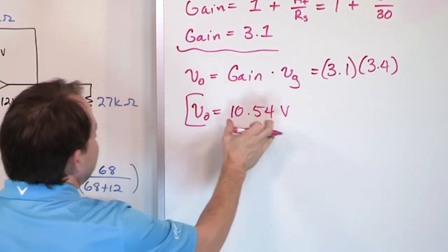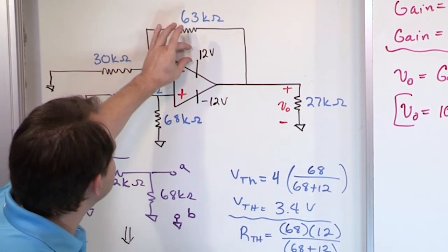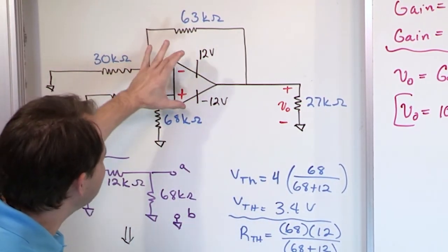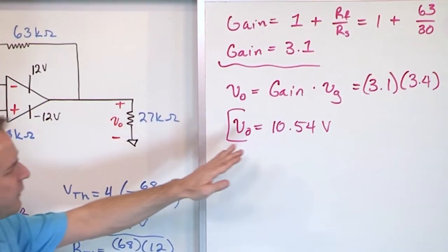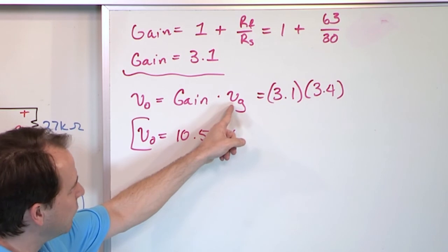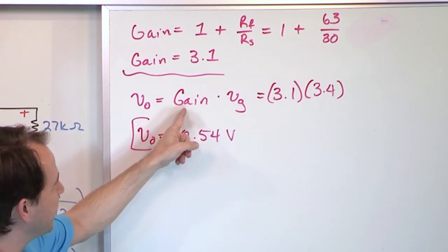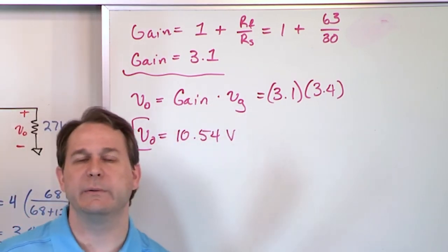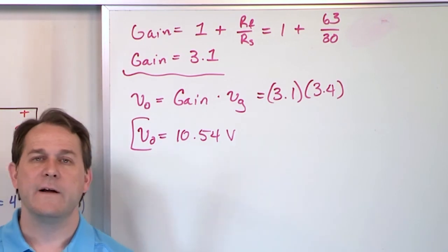And then you look and say, is 10.54 inside the linear region? It's almost to 12, not quite there, so it is in the linear region. So this is good. If we were to increase VG a little bit more or if we were to increase the gain a little bit more, then we would blow past 12 volts and we'd be in the saturation region. But right now, this one works fine.